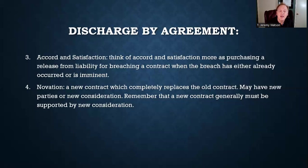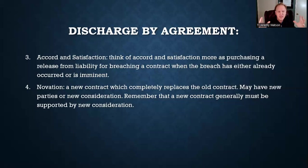The last type of discharge by agreement is novation. Try to break down the word — 'nova' is Latin for new birth. A supernova is when an old star collapses and explodes into something new. A novation is a rebirth: the parties have modified the contract so much that basically the old contract has collapsed and exploded into a new contract. We have substituted an entirely new contract for the old contract.